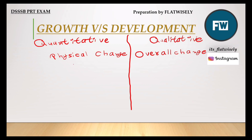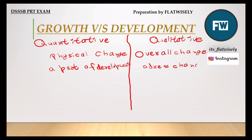Growth is part of development, but development is not completely growth. If growth is development, it is a subset — but if we say that everything that is development is also growth, that is not possible. That is why growth is part of development, but development addresses changes as a whole. Complete change is development.